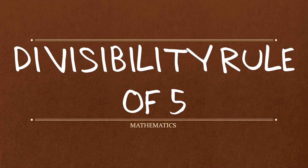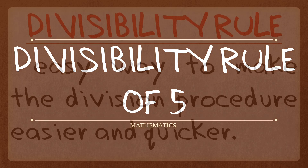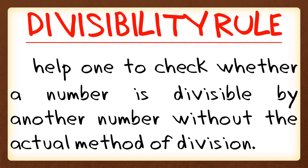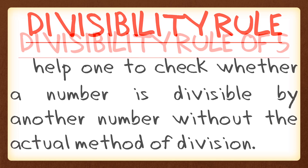In this video, we're going to learn about the Divisibility Rule of 5. A divisibility rule is an easy way to make the division procedure easier and quicker. It helps one to check whether a number is divisible by another number without the actual method of division.